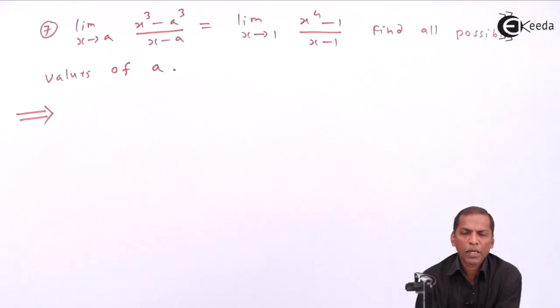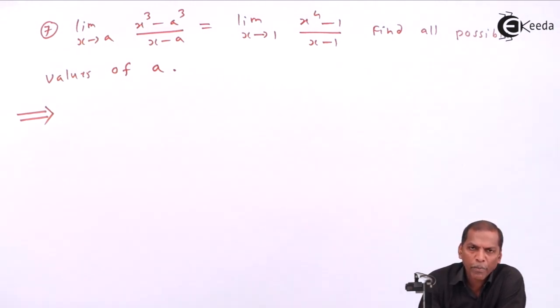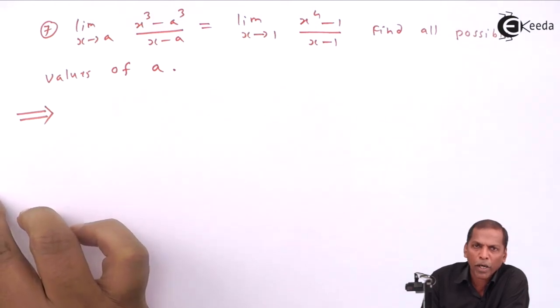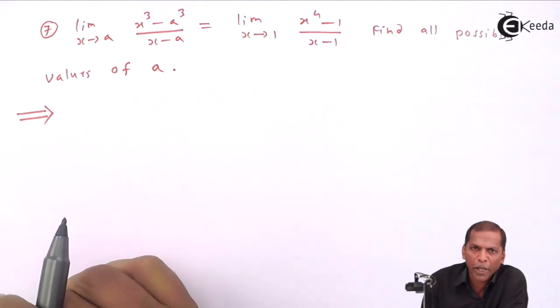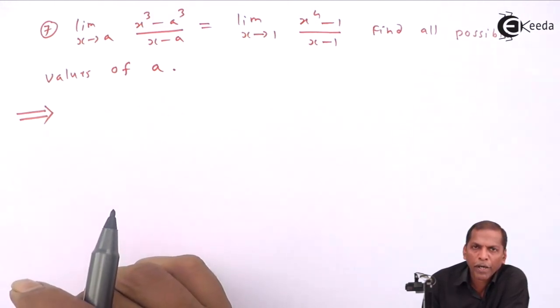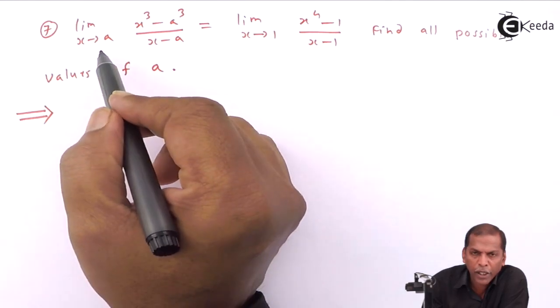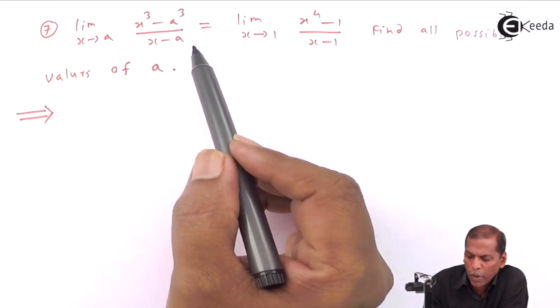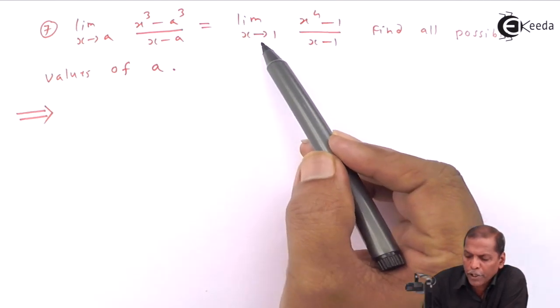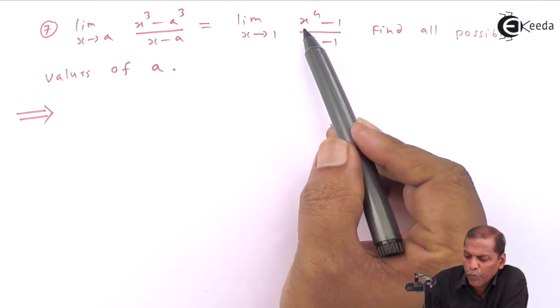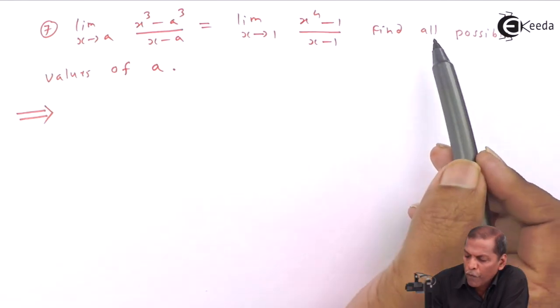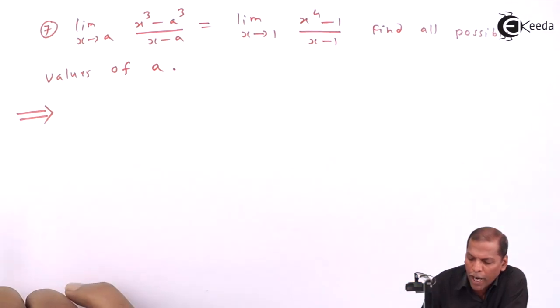Hello friends, now we see subtopic 7, problem number 7, which is also based on the same formula of chapter limits. The problem is: limit x tends to a of x cubed minus a cubed upon x minus a equals limit x tends to 1 of x to the power 4 minus 1 upon x minus 1. Find all possible values of a.